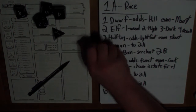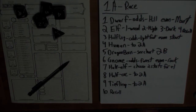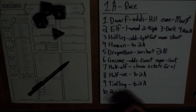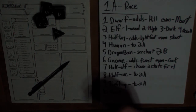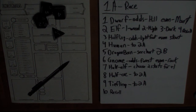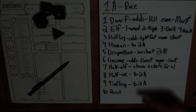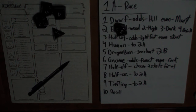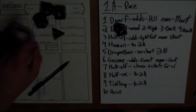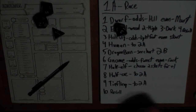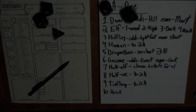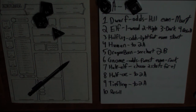Now we're going to randomize our race using a handy little chart I made right here. It uses a d10, and anytime you roll a 10 you re-roll. For races with subraces, there are different methods for randomizing those as well. Our race rolled up as halfling. So we roll another die — if it's odd, we're a lightfoot halfling; if it's even, we're a stout. We rolled a 4, which is even, so we are a stout halfling.